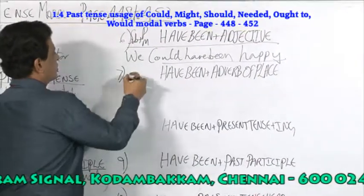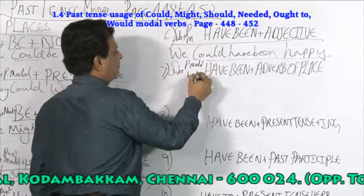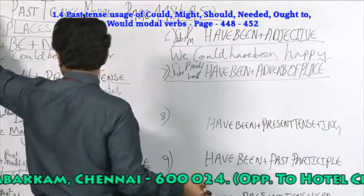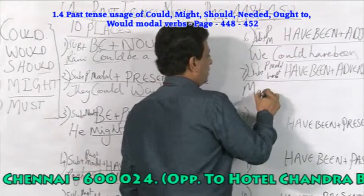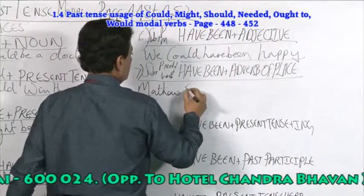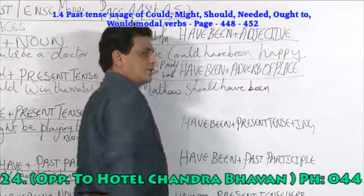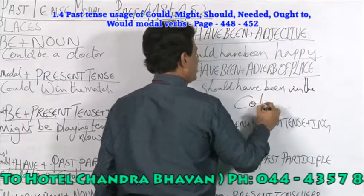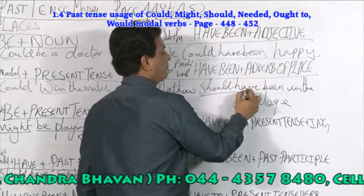Seventh place: subject plus past tense modal verb plus have been plus adverb of place. For example: Matthew should have been in the college. Any place can be used here. So this past tense modal — should, would, and others — is used with have been plus place.